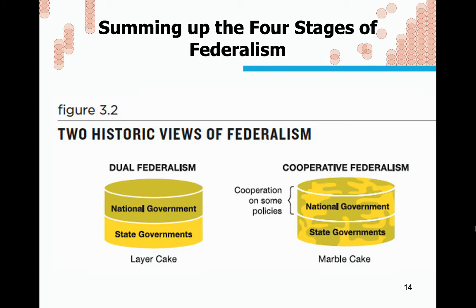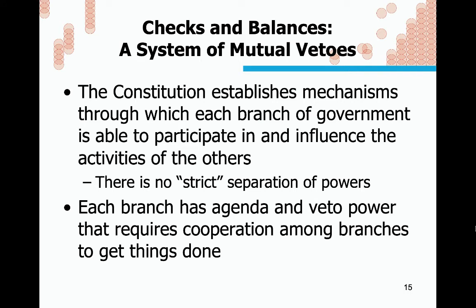A useful figure in the textbook views federalism as a dual federalism layer cake with the national government on top of state governments, or alternatively as a marble cake with a lot more overlap — which is more the reality, with cooperation between federal, state, and local governments. Regarding checks and balances: the Constitution establishes mechanisms through which each branch of government can participate in and influence the activities of others. In practice, there is really no strict separation of powers — just about anything one branch does will at least influence one of the other two.